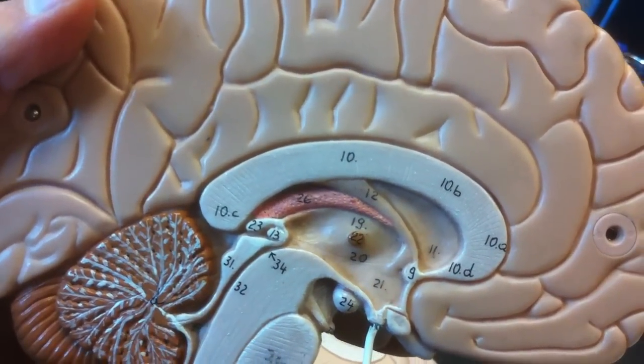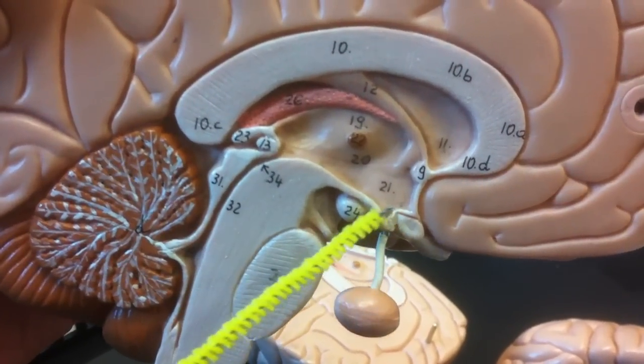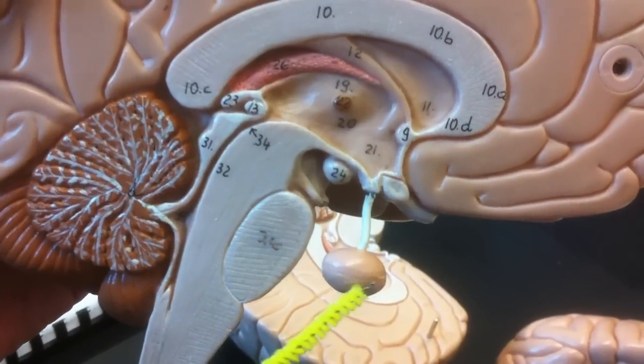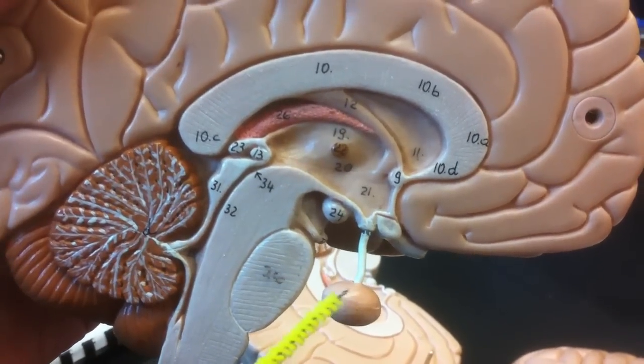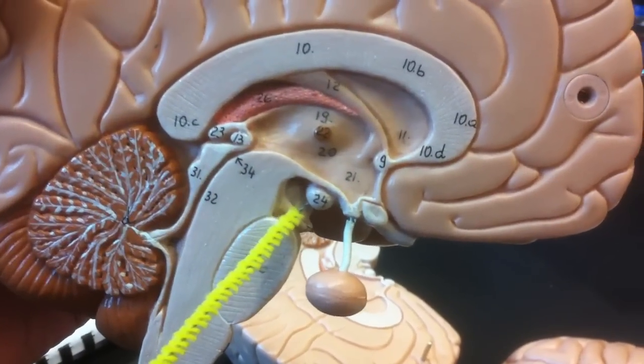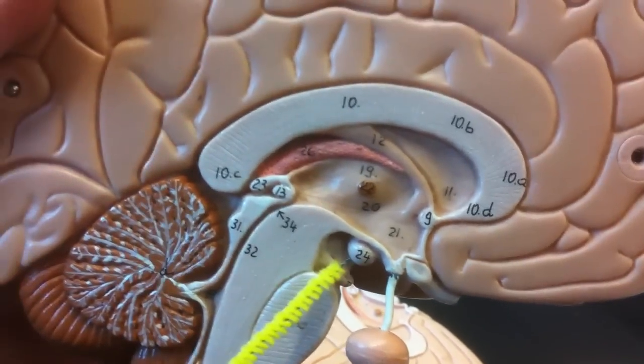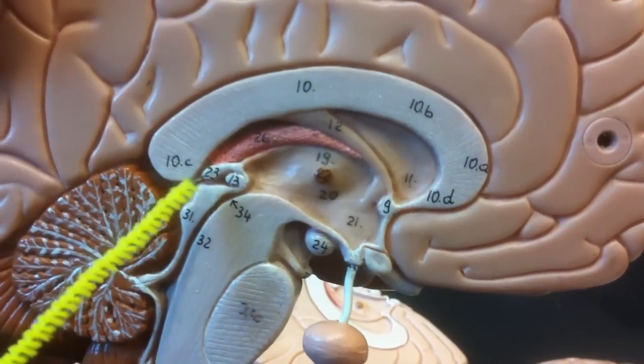The infundibulum. This wiry guy that connects the hypothalamus to the pituitary gland. Pituitary. The mammillary body, number twenty-four. The pineal gland. Pineal gland is number twenty-three, right here.